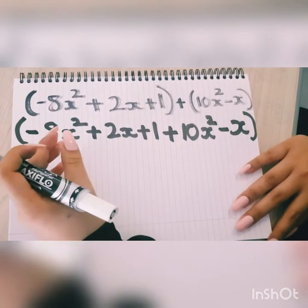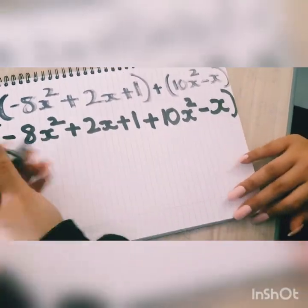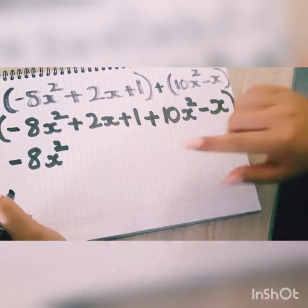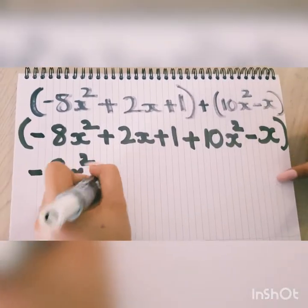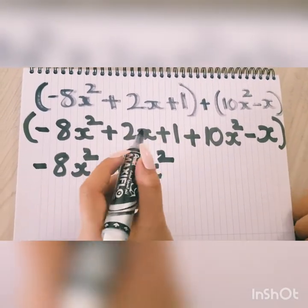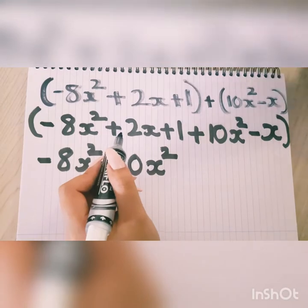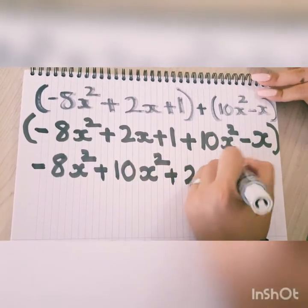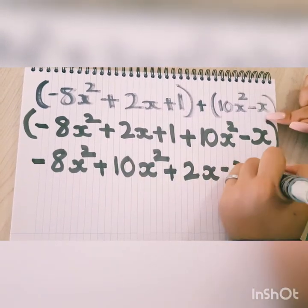Next let's take down and group the like terms. We have -8x² and its like term is 10x². And then the next two like terms are 2x and -x and then finally the constant, that's +1.